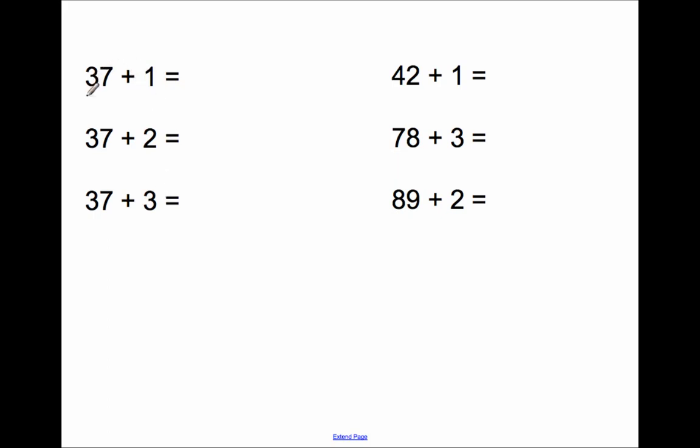So this would be 37 if this were a number line. You're starting at 37, and all you're doing is giving me the next counting number that comes right after 37.